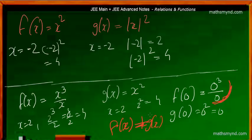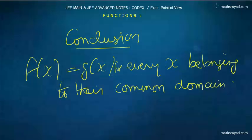You may say to just omit 0 and continue, but that is not valid. For all input elements — for all x — you should be getting the same output. That is the point. So the conclusion is that f of x is equal to g of x for every x belonging to the common domain. That is the general meaning of equal functions.